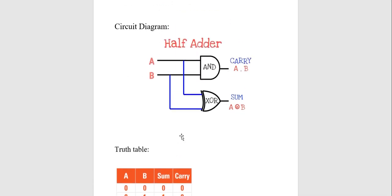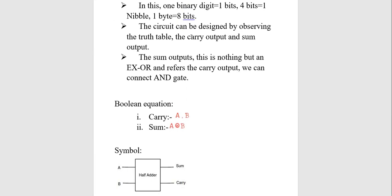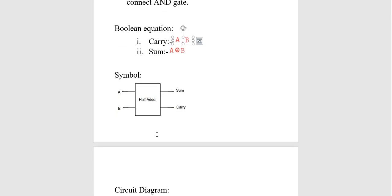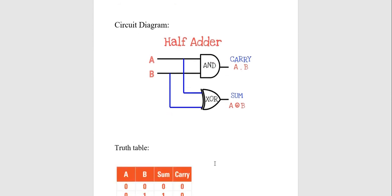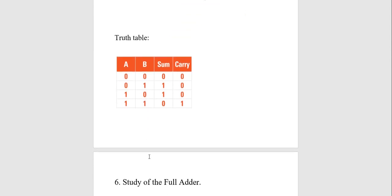This is the program for students. You will have to write these four components: remember what is the use of the half adder and how it is designed. Then write the Boolean equation for the half adder. Draw the symbol of the half adder. Then draw the circuit diagram consisting of two gates — the AND gate and the XOR gate — where the XOR gate generates the sum and the AND gate generates the carry. Finally, include the truth table. This is how you have to design the half adder.